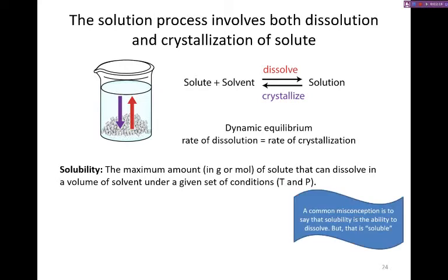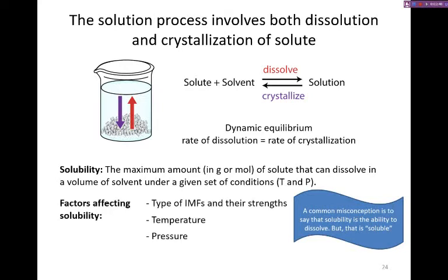When we talk about solubility, this is the maximum amount of solute that can dissolve in a given volume under a given set of conditions. This could be an amount given in grams or moles, and we also have to specify what temperature and what pressure we're doing this at. A very common misconception is to say that solubility is the ability to dissolve, but really, that's the definition of soluble. I think that the reason why students get this misconception is because ability is in both of them. Be very careful that you're not mixing up the term soluble for solubility. And there's a couple of factors that affect solubility. Because we're talking about it has to be at a given set of conditions, the temperature and pressure will play a role. Additionally, the type of intermolecular forces and the strength of those intermolecular forces also affect the solubility, the amount of a substance that can dissolve in another.